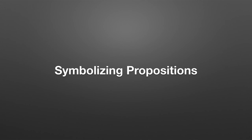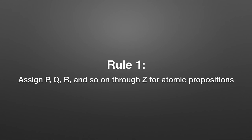Hello everyone. Sorry for the disembodied voice routine, but these sorts of problems require you to pay much more attention to what's written on the screen than my facial expressions. So what we're going to do here is actually symbolize propositions. We've gone through truth relations, terms and definitions, and now we're going to start assigning variables to sentences. This will result in a kind of calculus for these arguments. The first rule for these symbolizations concerns the variables — the letters we're going to use to represent atomic propositions.